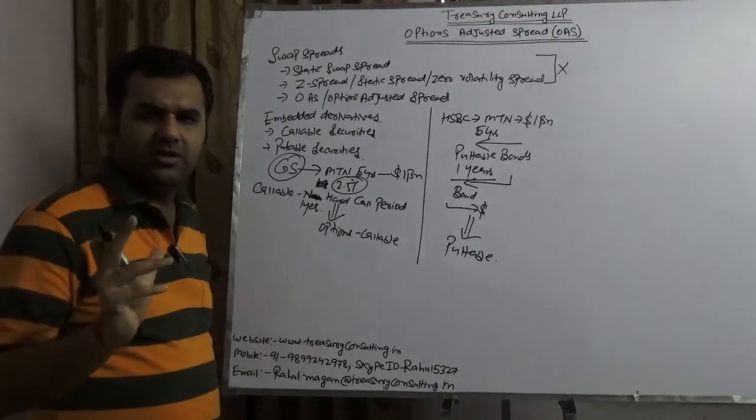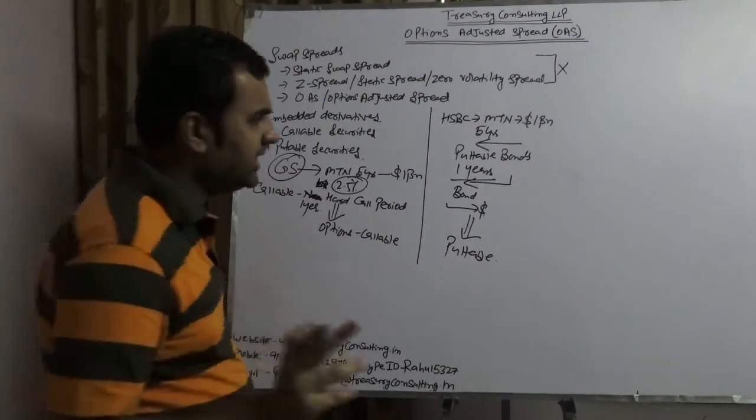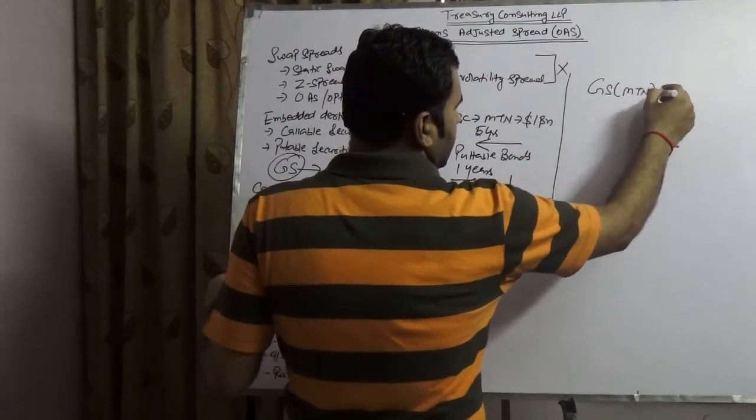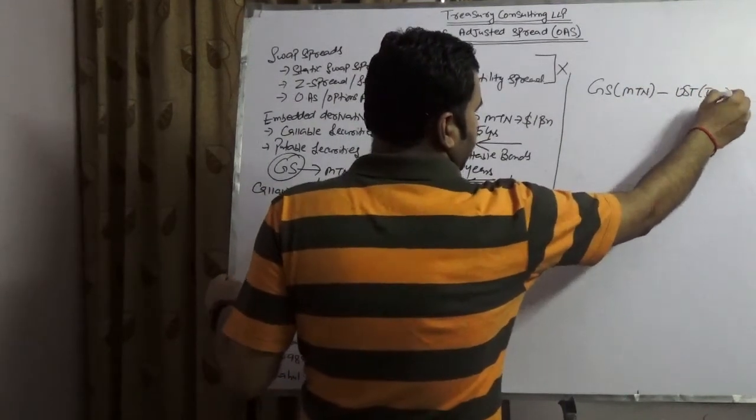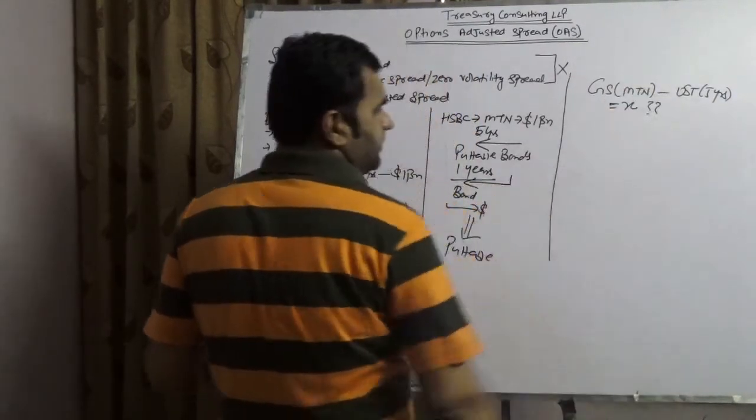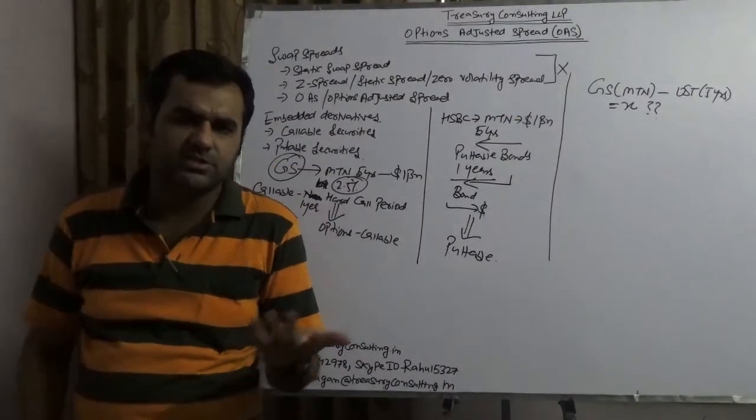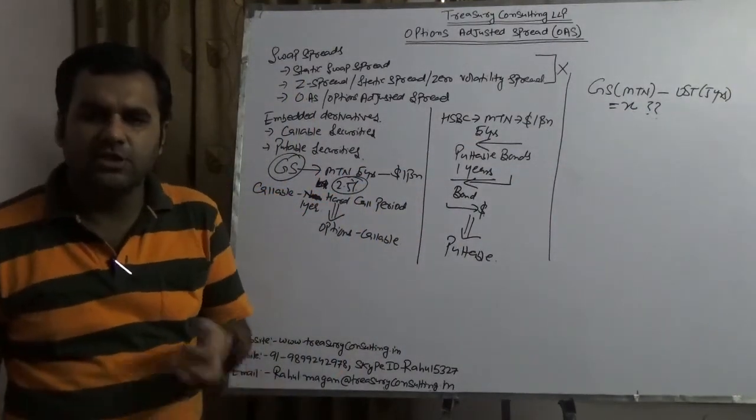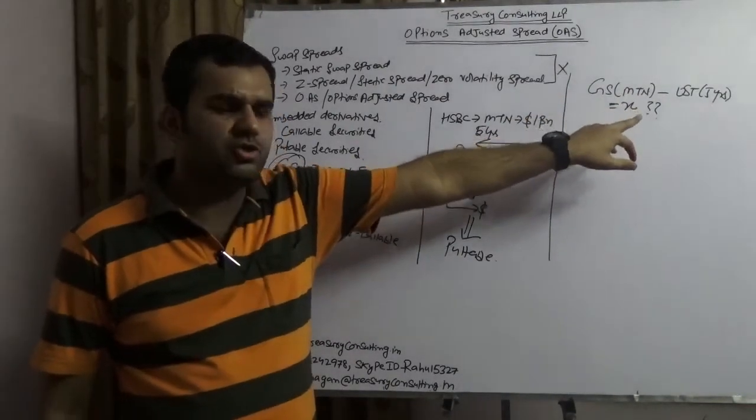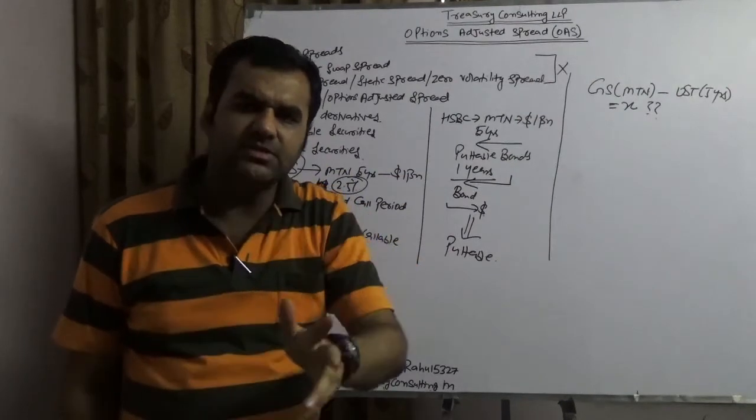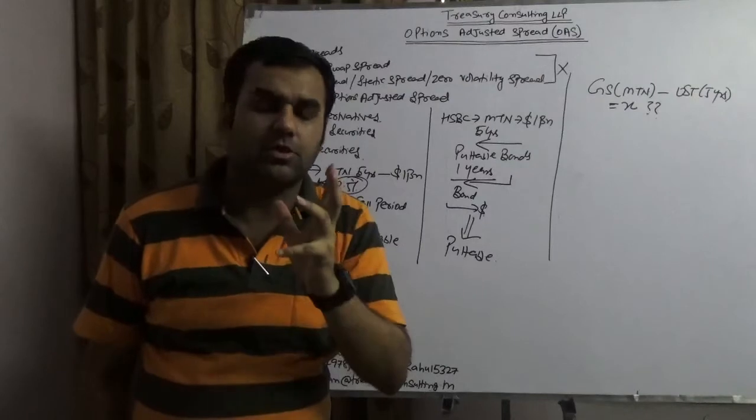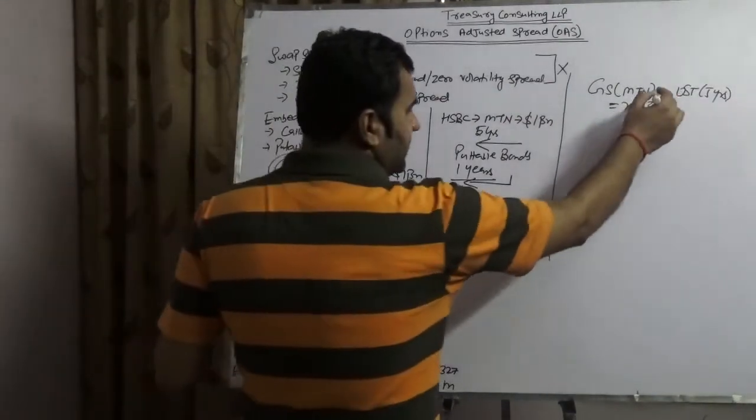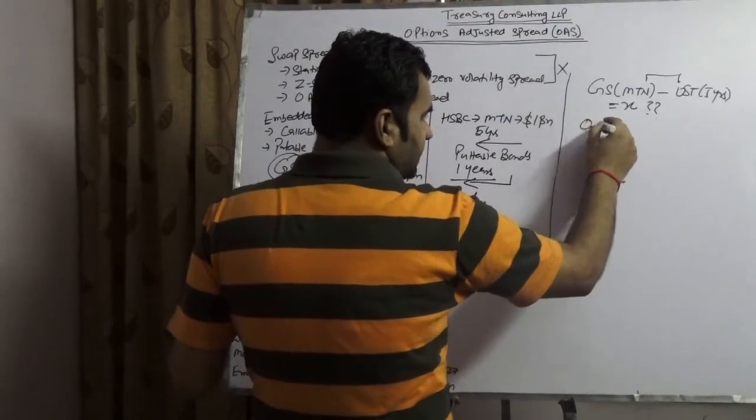But how would we go to value this? Suppose today I want to calculate a spread. What is that spread? I want to calculate the spread of GS medium-term notes minus UST 5-year, and answer is X. I'm putting a question mark. Is that right? This is not correct, because UST 5-year does not have any embedded options, while GS is having embedded options. So a bond which is having embedded options should not be compared with a government security which does not have embedded options. This is technically wrong. So what does it mean?